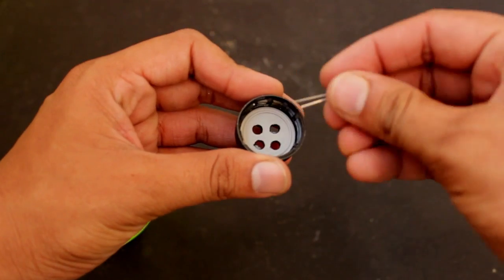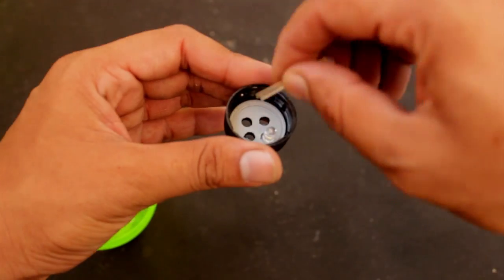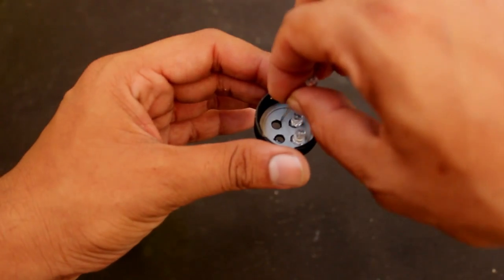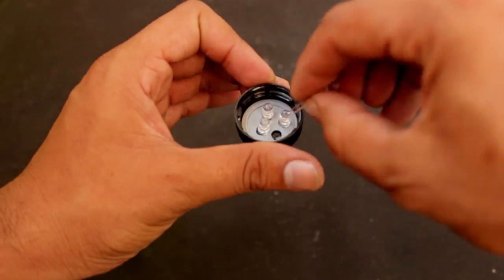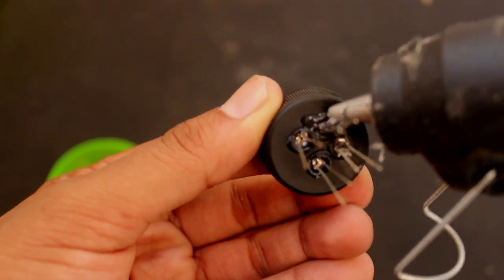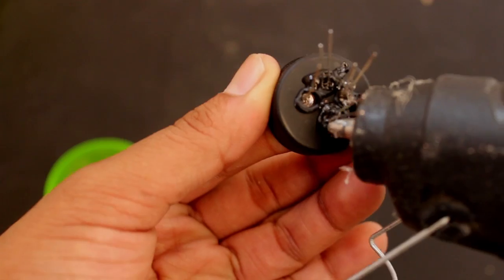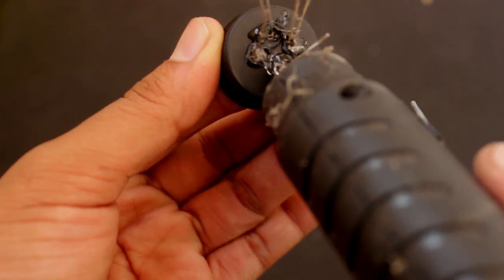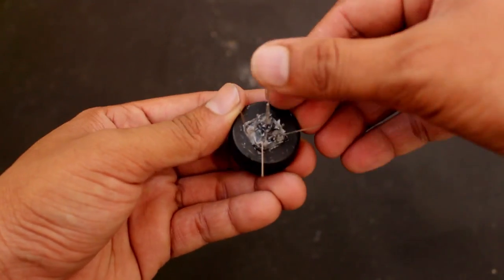Fix the LEDs inside the cap and apply hot glue. Make sure that all the negative ends of the LEDs are facing the middle of the cap. Negative means smaller ends. Now join all negatives and twist them.